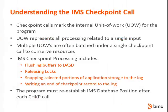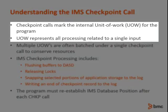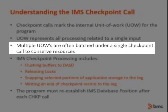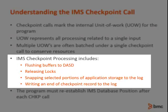Now let's look at the checkpoint call. After the XRST call is issued, program execution will continue and the program will begin its normal processing. Periodically, the program will reach a point where it has completed all processing for a single input — this is called the internal unit of work, or UOW, boundary. When a UOW boundary is reached, the program will issue a checkpoint call and then resume processing by getting the next input record. Often, to reduce overhead, multiple UOWs will be processed before a checkpoint call is issued. The checkpoint will record the state of the batch job step — very similar to periodically clicking the save button as you develop a document. IMS checkpoint processing includes flushing buffers to DASD, releasing held locks, writing the 0x18 record to the IMS log which contains portions of application storage, and writing the 0x41 record to the IMS log to mark that the checkpoint is completed.